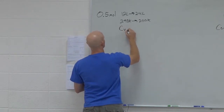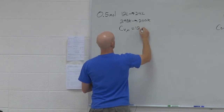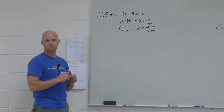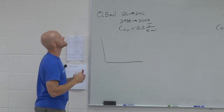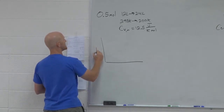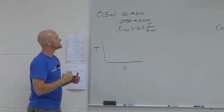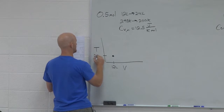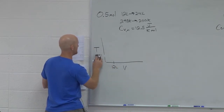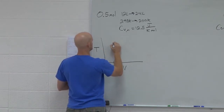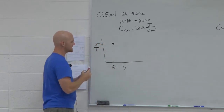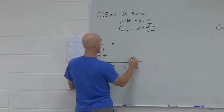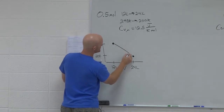You're given that Cv, the molar value, is 12.5 joules per K·mol. If we plot this out, we're dealing with a volume change as well as a temperature change. I'm going to plot temperature on the y-axis and volume on the x-axis. We're starting with an initial volume of 12 liters and an initial temperature of 298 Kelvin, and we're going to cool this thing down with the volume changing simultaneously, ending up at 24 liters and 200 Kelvin. What is delta S for this process?